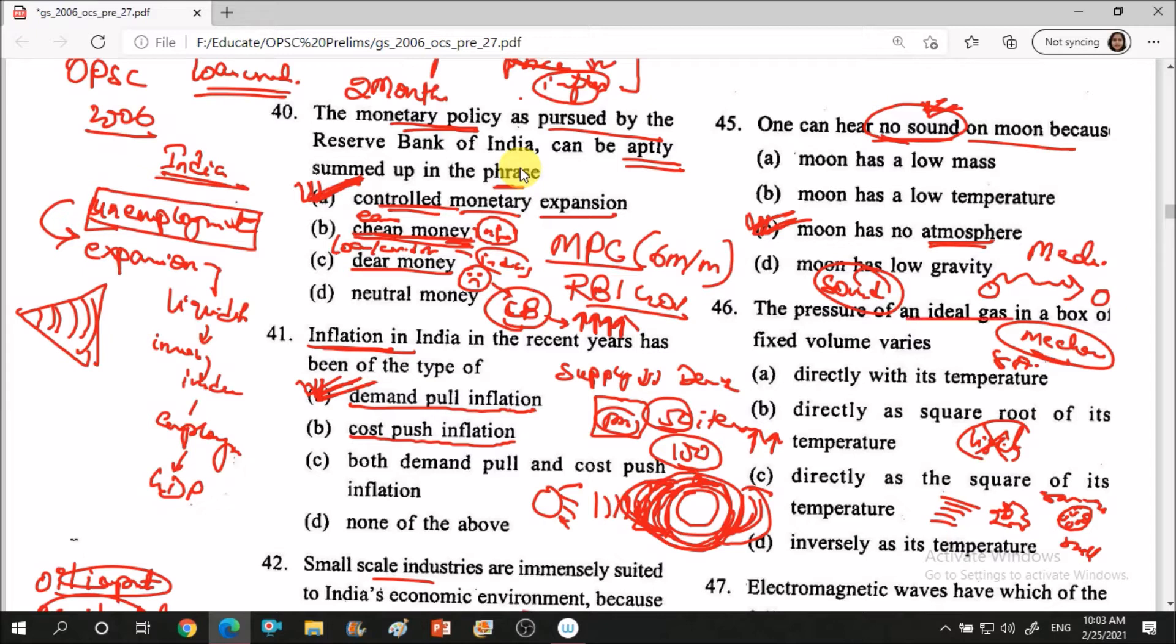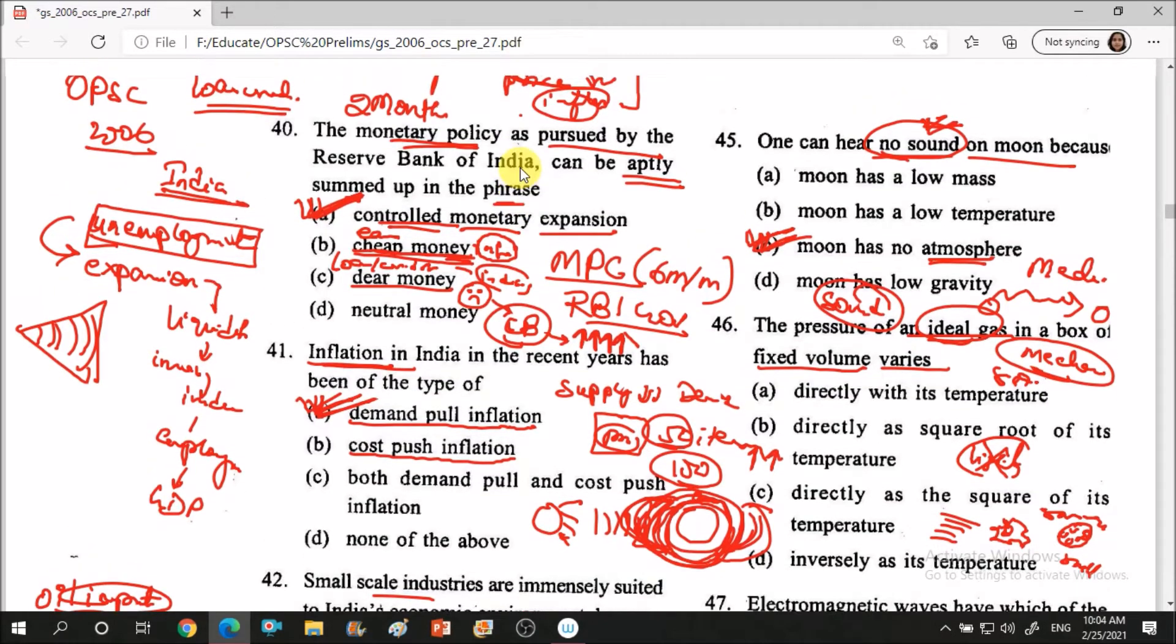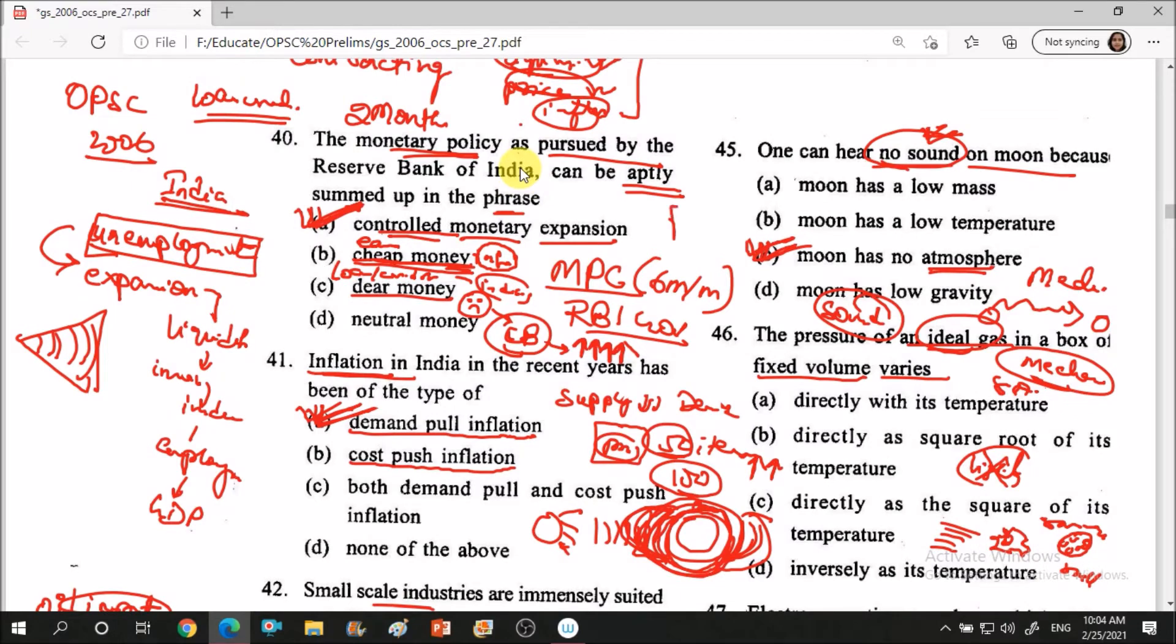Next question: pressure of an ideal gas in a box of fixed volume varies at dash. For ideal gas, the equation is PV equals nRT. It is given that volume is fixed, so volume is constant. What is the relation between pressure and temperature? Pressure is directly proportional to temperature. P is directly proportional to T. So option A is correct, directly with temperature.